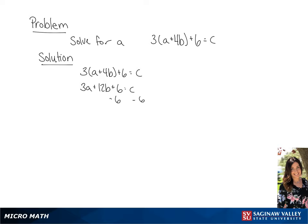Now we're going to subtract 6 from both sides, giving us 3A plus 12B equals C minus 6.